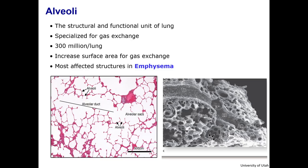Alveoli, the terminal part of the respiratory zone, are sac-like evaginations from the respiratory bronchioles, alveolar ducts, and sacs. Each adult has roughly 300 million per lung, for a total surface area of around 75 meters squared. Air in these structures exchanges oxygen and carbon dioxide with the blood and surrounding capillaries through specialized walls that enhance diffusion.